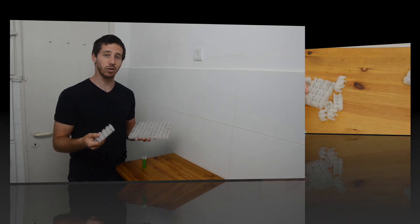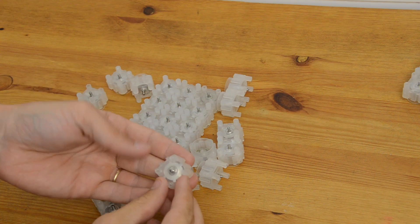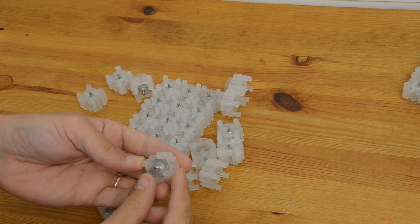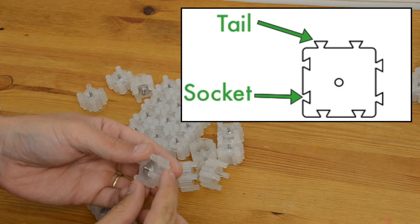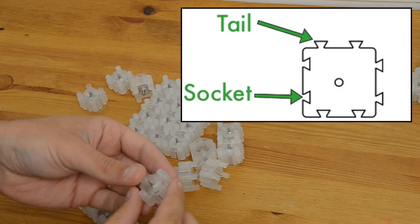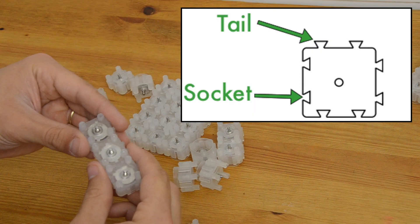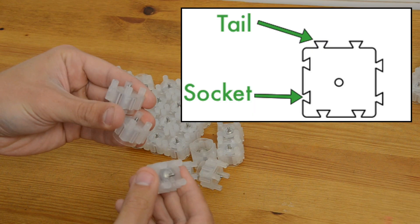Now let's look at how these caps work. Now the caps themselves use a dovetail system, where on two sides of the cap you have tails and on the other two sides you have sockets. And that allows you to slide the caps together really easily and then you can of course take them apart again as well.